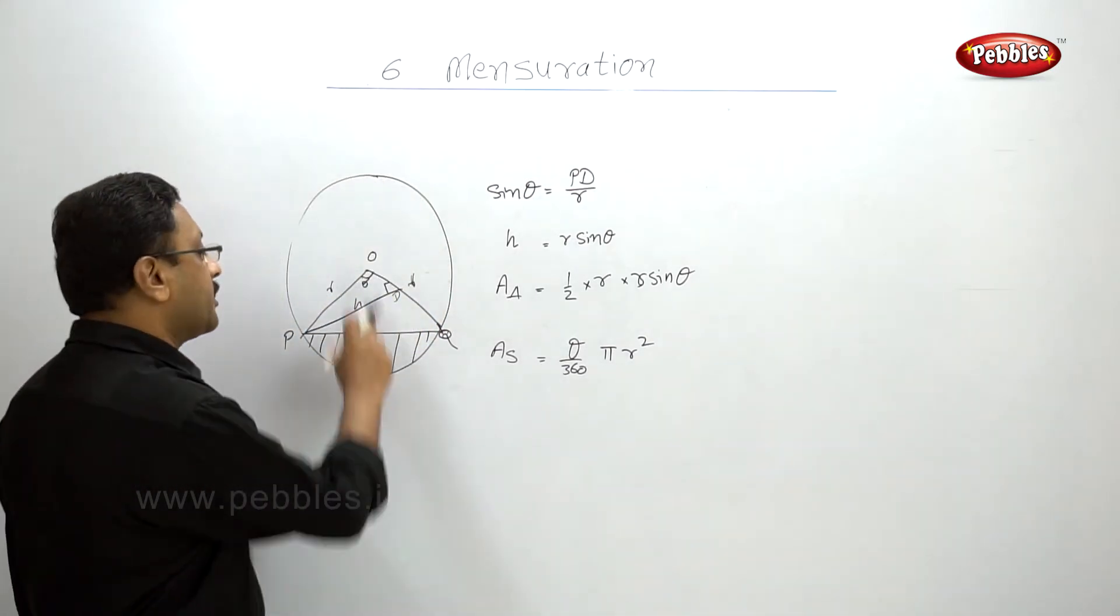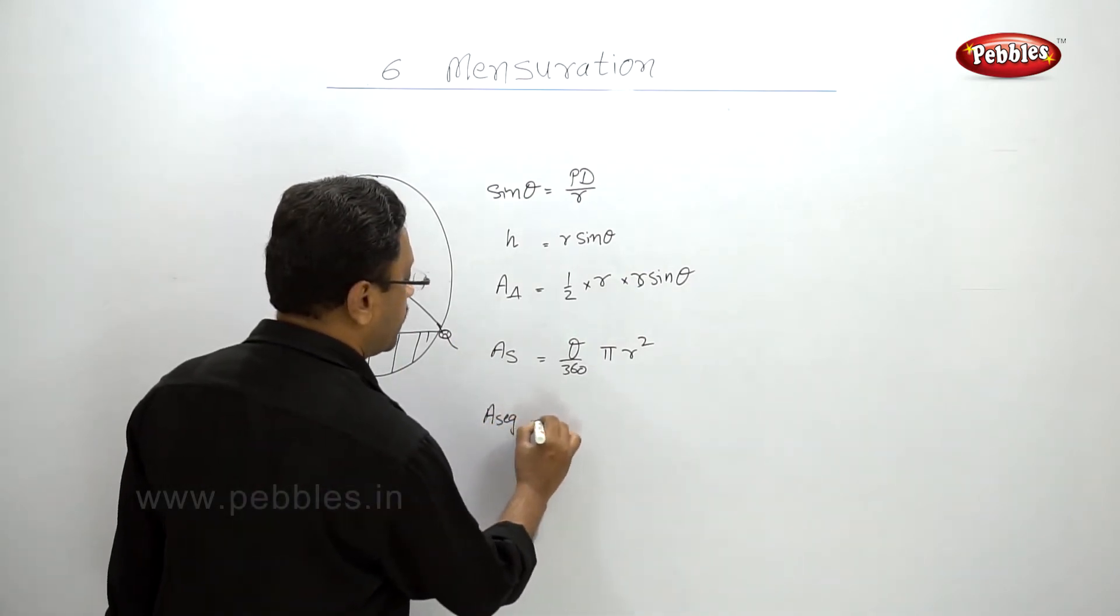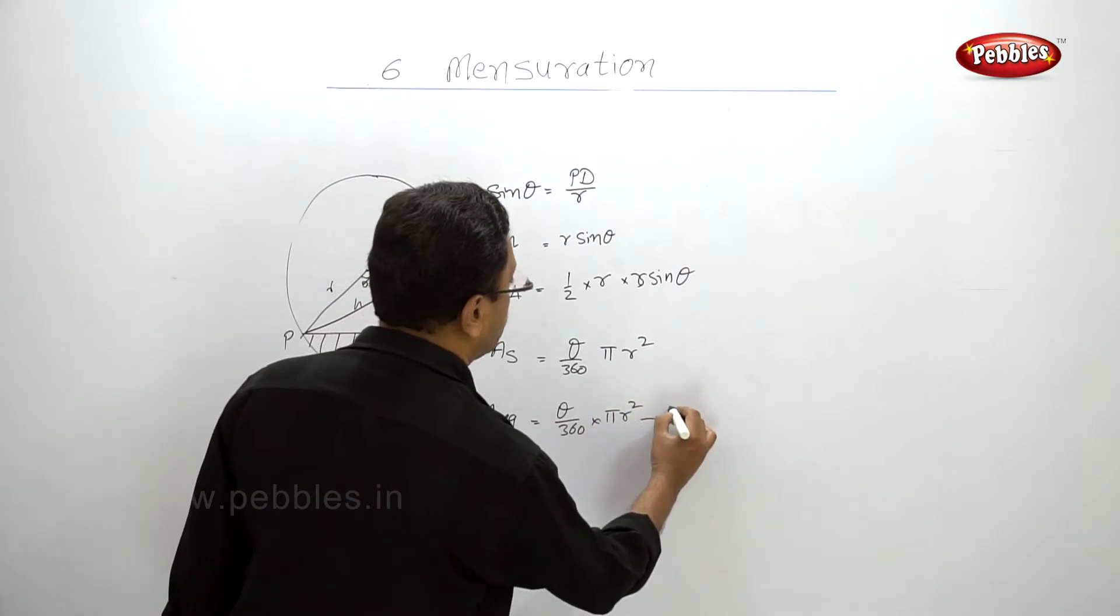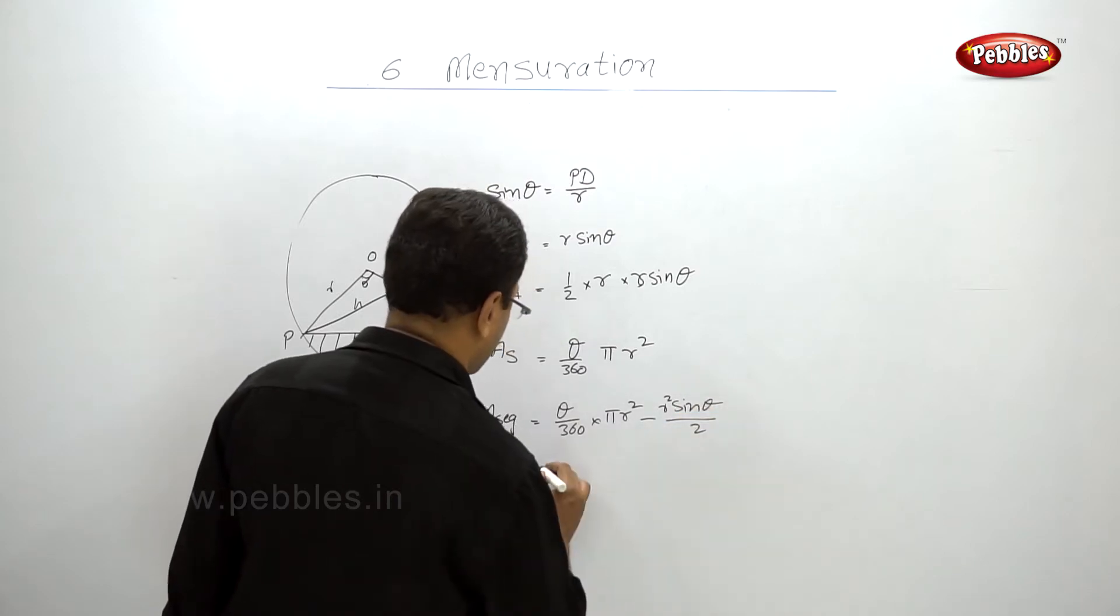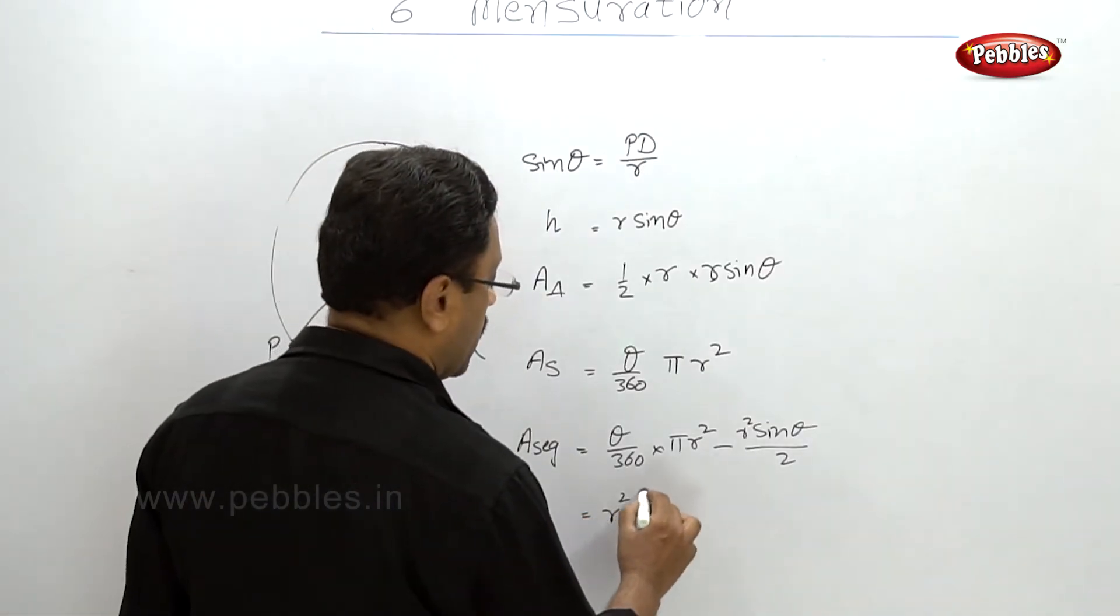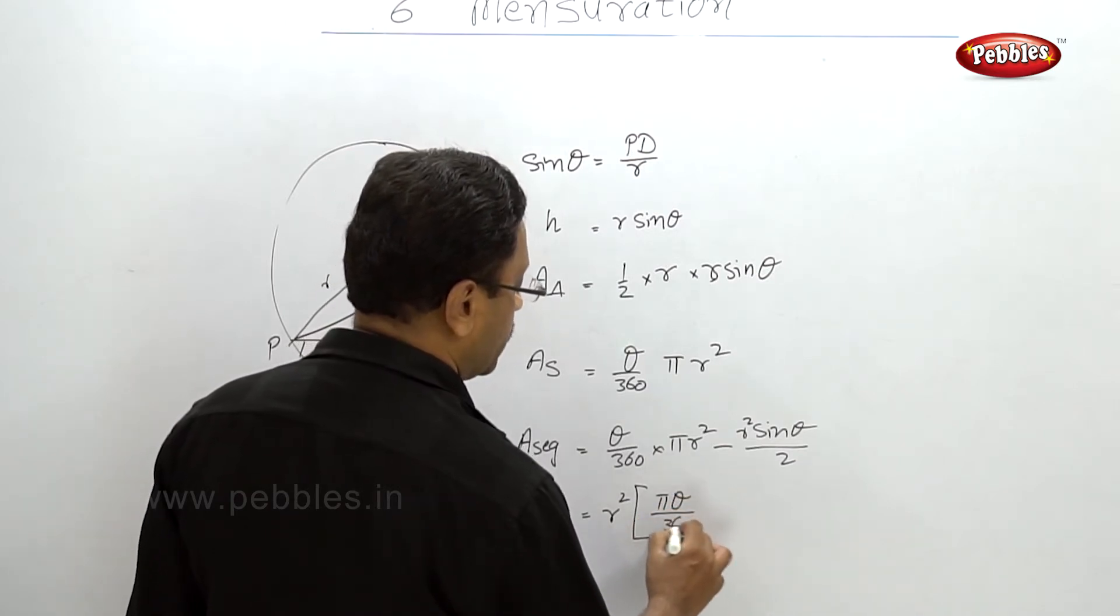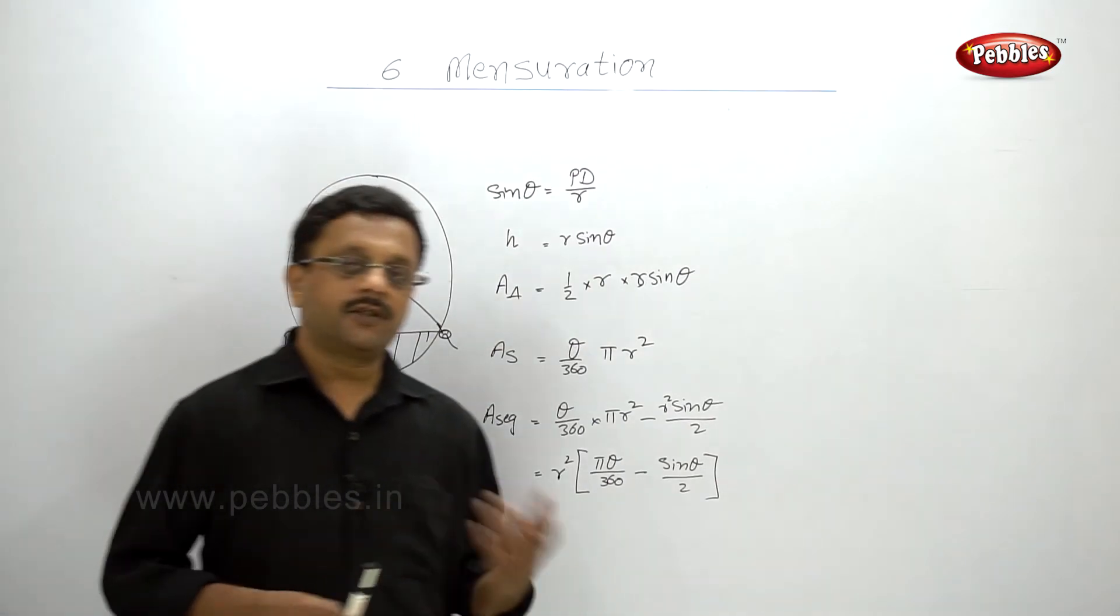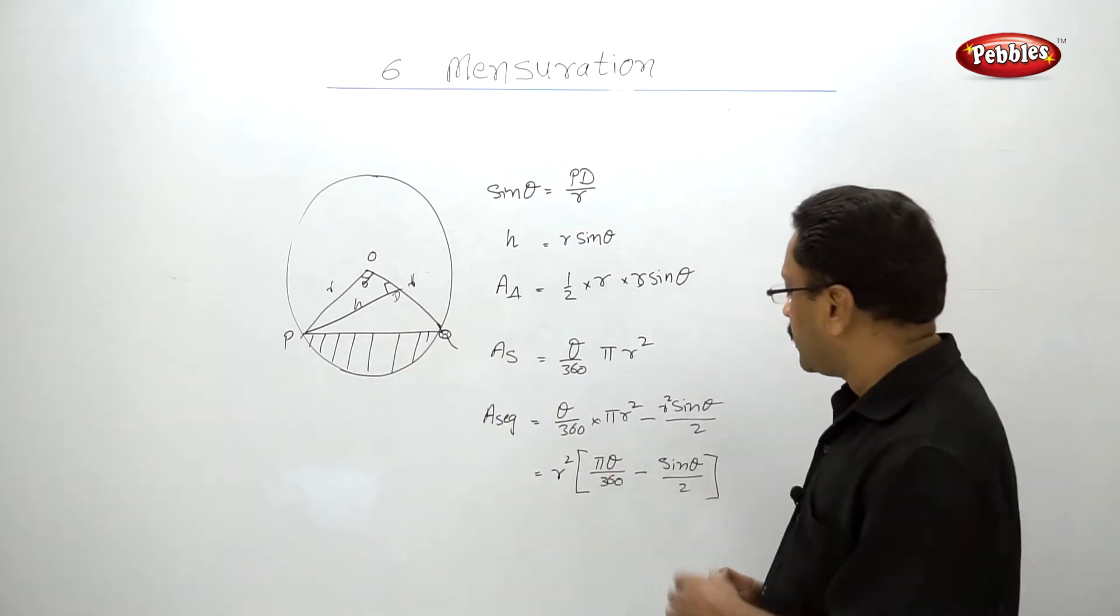If you subtract the area of triangle from the area of sector, you will get the area of segment. That is theta by 360 into pi r square minus r square sine theta upon 2. Now let's see what common we have - R square is common here. So R square into bracket pi theta upon 360 minus sine theta upon 2. So this is the formula for the segment of a circle. Based on this let us see few examples.